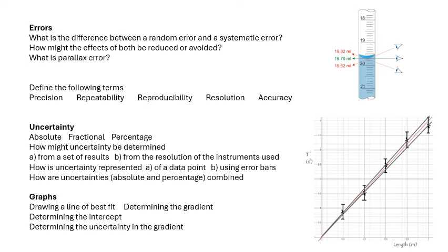Define the following terms: what does precision mean? Repeatability and reproducibility - what's the difference between those two? Resolution, what does accuracy mean? Uncertainty. Again, I've done a whole video about uncertainty. There's absolute, fractional, and percentage uncertainty. How do you actually determine the uncertainty from a set of results or from the resolution of the instrument that you're using?